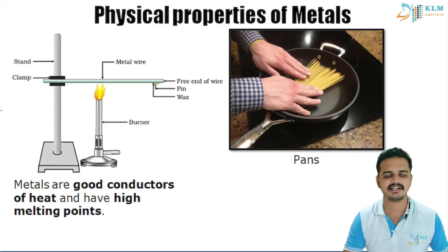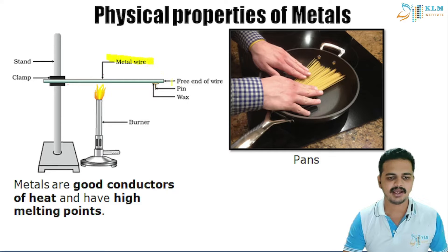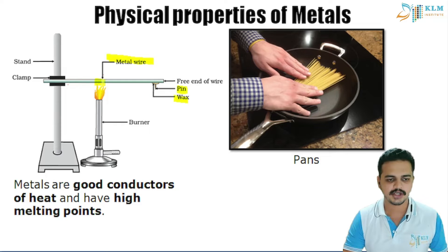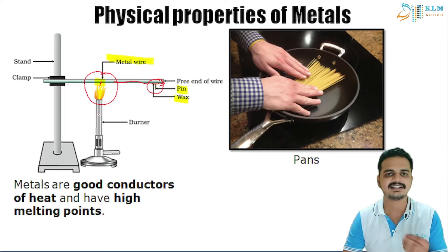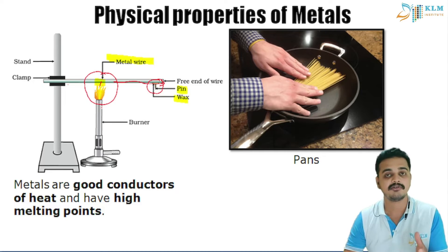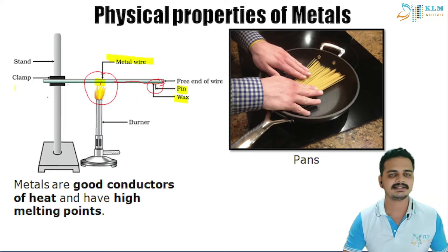To understand the next physical property of metals, we will perform a small experiment. We take a metal wire with wax attached to a pin at one end, and apply heat in the middle of the wire. The heat is not limited to just that area — it travels all the way to the end of the wire, causing the wax-pin combination to fall down.